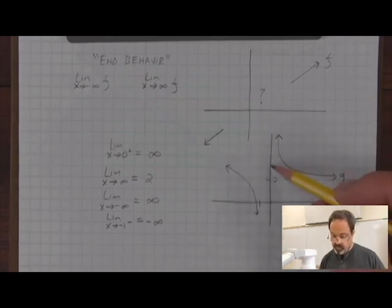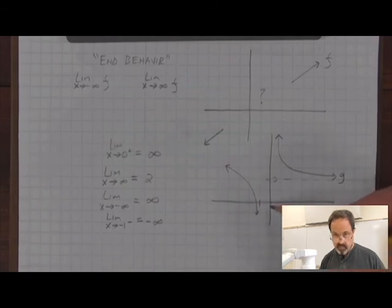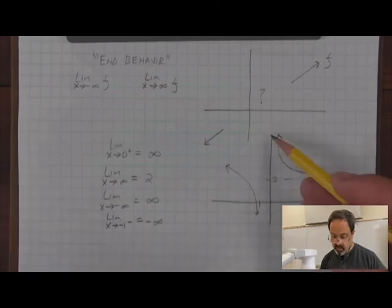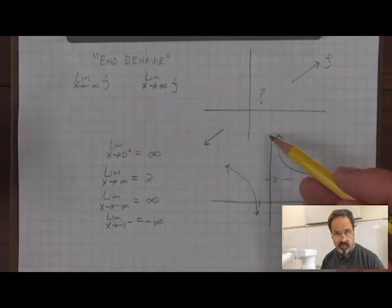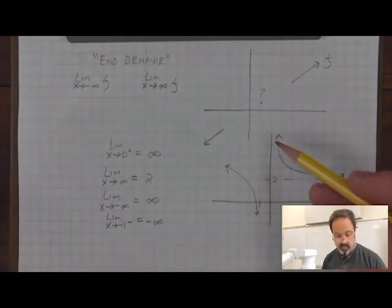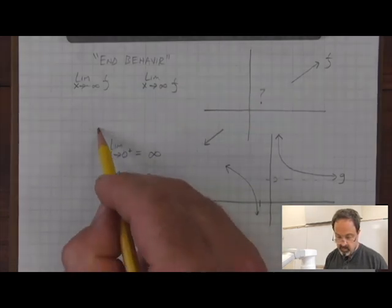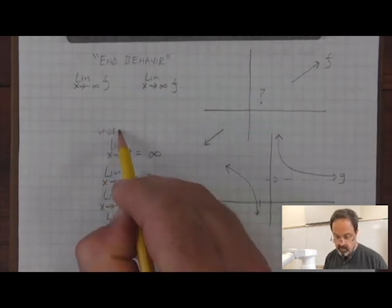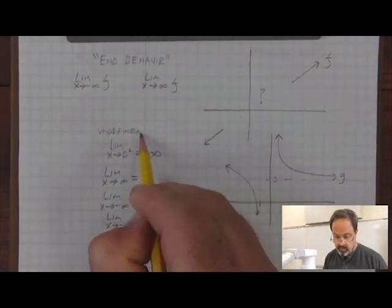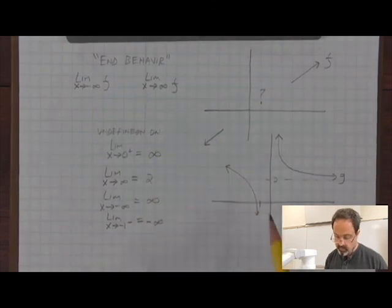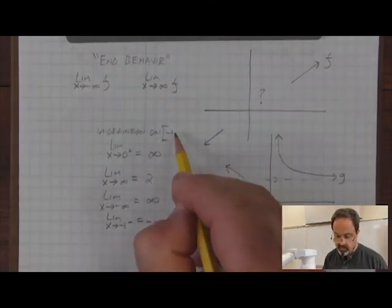What would we say about the region between these asymptotes at negative 1 and 0? This place in the domain between negative 1 and 0 does not have any function values represented in the graph. We could say that the function is undefined on the interval from negative 1 to 0.